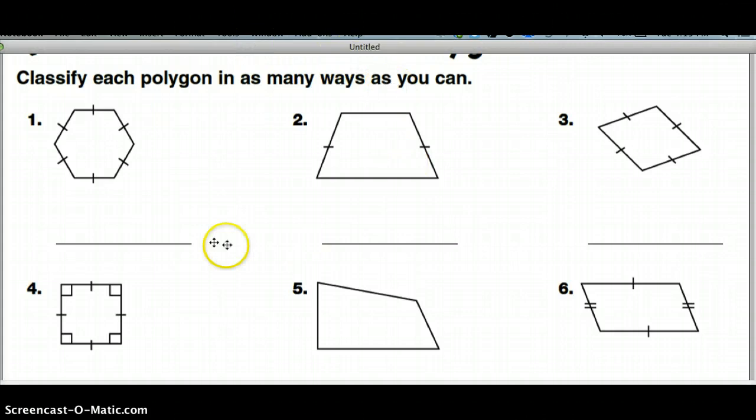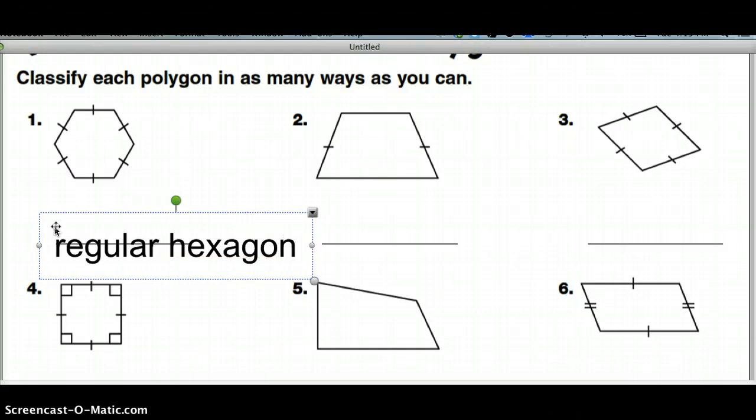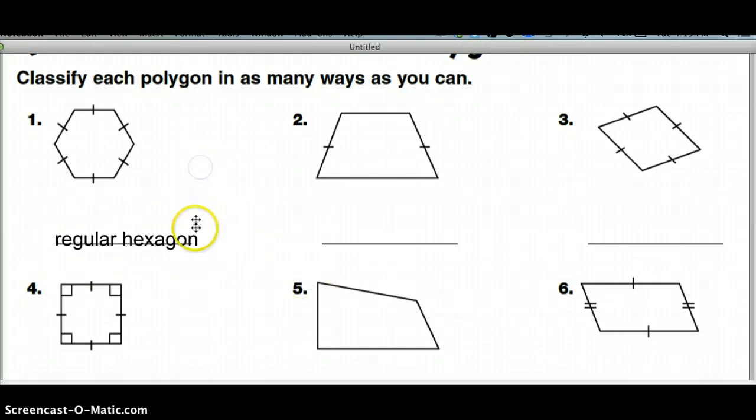Okay, it says to classify each polygon as many ways as you can. This polygon has 1, 2, 3, 4, 5, 6 sides. So that makes it a hexagon. It also has one line on each side so it's telling you that all sides are the same length. So this is a regular hexagon. There's no other description you can say. I guess you could also call it a polygon, but that's really not necessary. Right here it says each polygon.